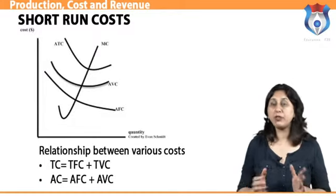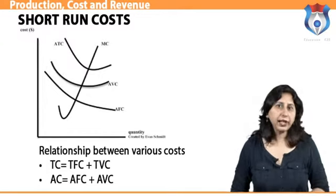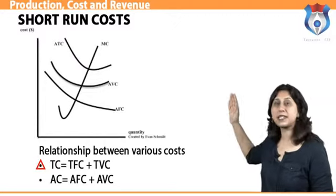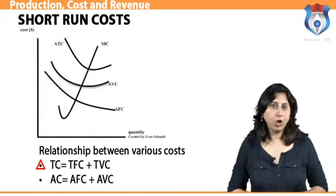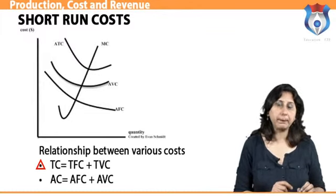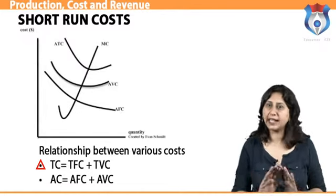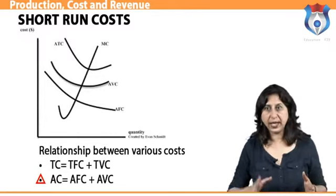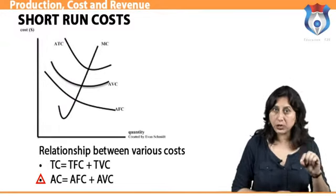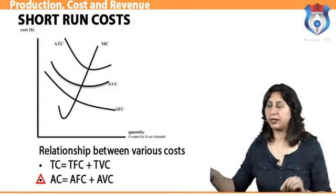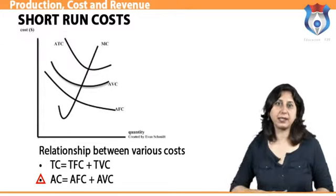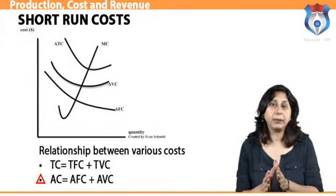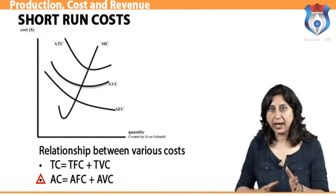The relationship between total cost, total fixed cost, and total variable cost is as follows: TC is the sum of TFC plus TVC. Only total variable cost changes the total cost because total fixed cost always remains fixed and never increases or decreases with the change in level of output. Average cost is the sum of average fixed cost and average variable cost: AC = AFC + AVC. The gap between AC and AVC comes closer and closer but they never intersect, because AFC is continuously falling and never rises.